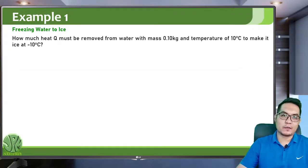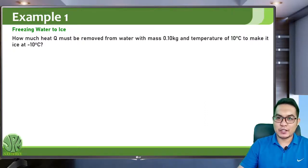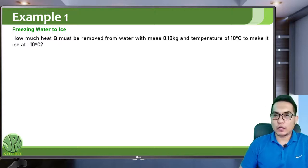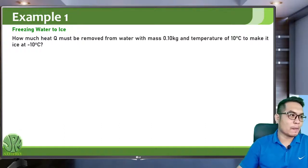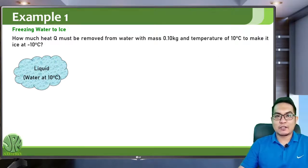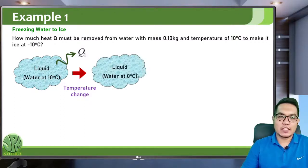Let's go to the first example: freezing water to ice. How much heat Q must be removed from water with mass 0.10 kilograms at 10 degrees Celsius to make it ice at negative 10 degrees Celsius? Before solving, analyze how many changes the water undergoes. We start with liquid water at 10 degrees Celsius, which releases heat Q1 and undergoes a temperature change until it becomes liquid water at zero degrees Celsius.